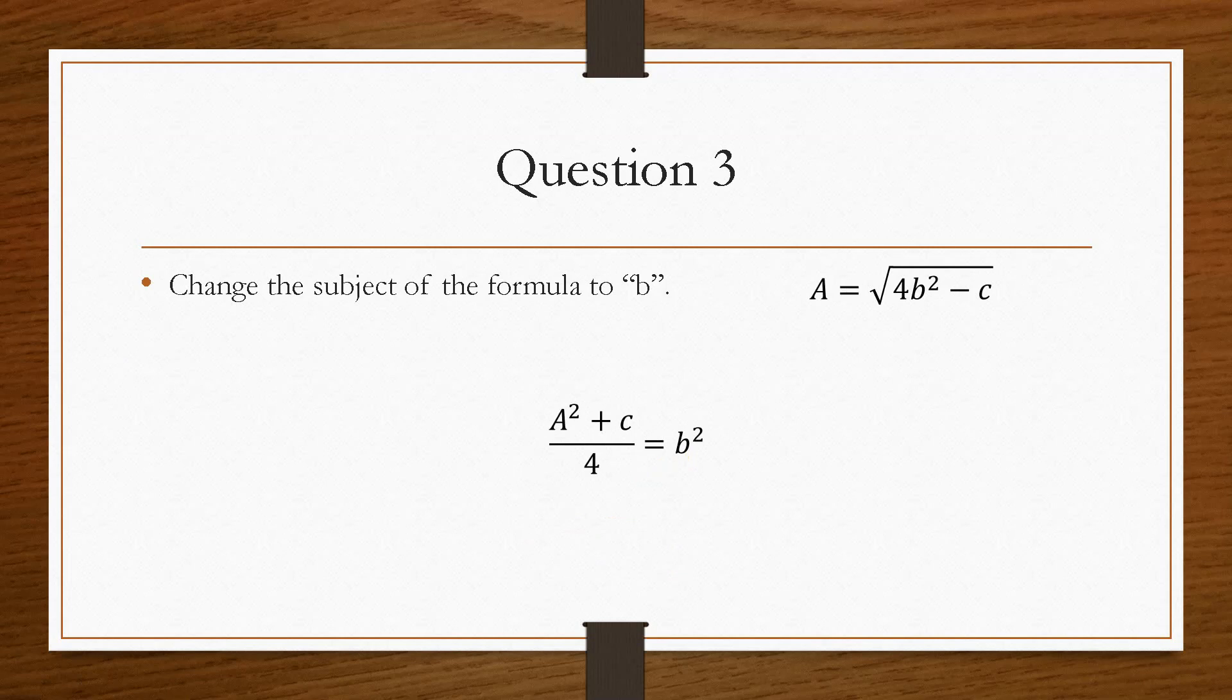Now the final step is we have to take the square across to the other side. And from the rules, when we remove the square, we have to take the square root of each side. So that means that this goes over to the other side, and it becomes the square root of a squared plus c, all divided by 4. And that's how you would go about solving that kind of problem there.